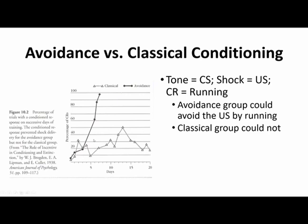In the avoidance group, a new contingency was added where if the tone played and the guinea pigs rotated the wheel, they wouldn't receive the shock. If they did the conditioned response of running, they could avoid receiving that unconditioned stimulus. What we find is that their rate of running skyrocketed — they very quickly learned that running allowed them to avoid that aversive stimulus. So they ran a lot whenever they heard the tone, at a much higher rate than the classical conditioning group, because the avoidance group could actually avoid the shock by running.